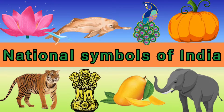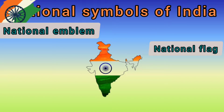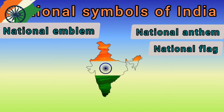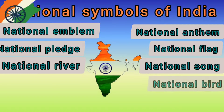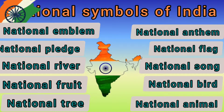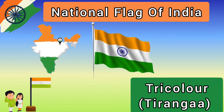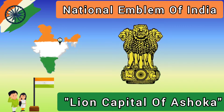National symbols are: national flag, national emblem, national anthem, national pledge, national song, national river, national bird, national food, national animal, and national tree. National flag of India — Tiranga, the tricolor. National emblem of India — Lion Capital of Ashoka.